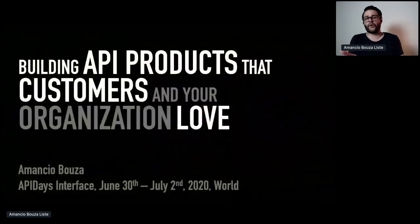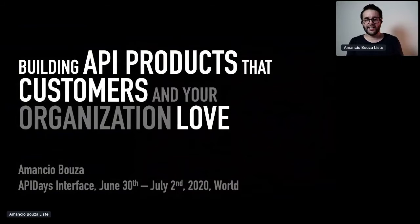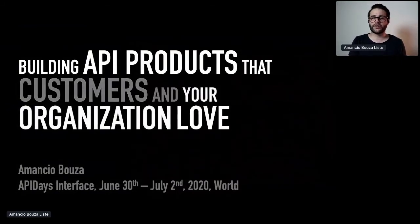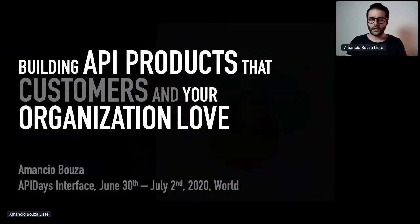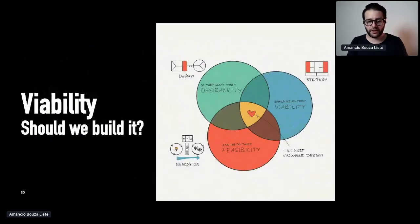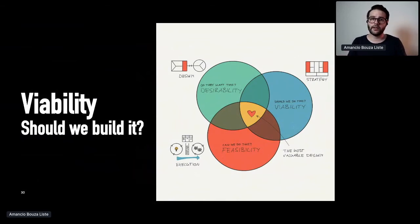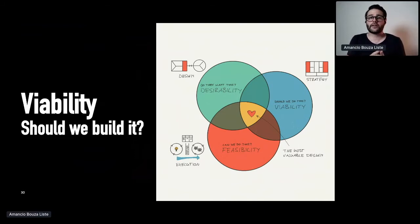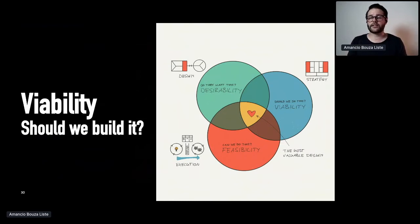The VPI canvas really helps to validate the problem-solution fit and find API products that customers truly desire. That's the first key point of this talk — building API products that customers really love. But what about building API products that organizations also love? That brings us to the second thing: viability. Should the organization actually build it? It could provide value to the customer but not to the organization — for instance, it's not on strategy, it's too costly, or it's not a core competence of the company.